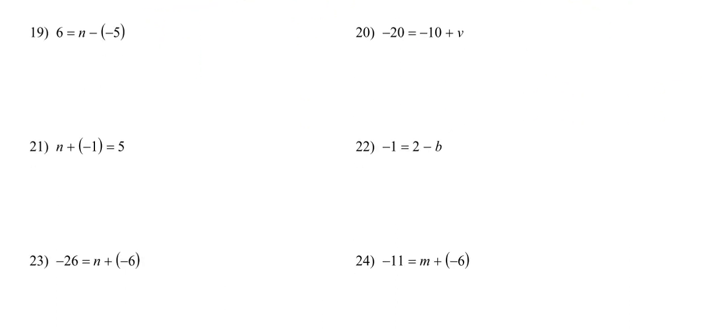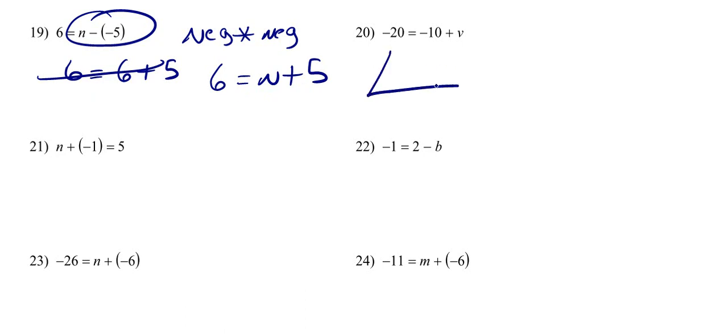Number 19, we've got these double negatives again, right? So remember, negative times a negative is a positive. So we can do 6 is equal to... Ah, I wrote that wrong. So you've got 6 is equal to n plus 5. What number added to 5 gives you 6? So you've got n, you want to add 5 to it, and you want to get 6.